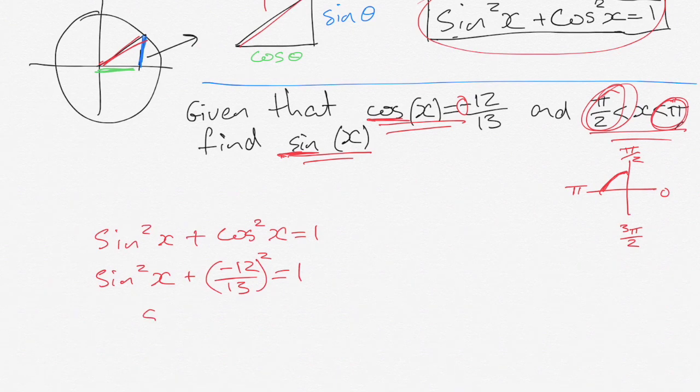That tells me that sin squared x is equal to 1 minus and I'm going to do negative 12 squared which is 144 over 13 squared which is 169. Thus 1 minus 144 over 169 is equal to 25 over 169.